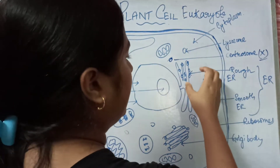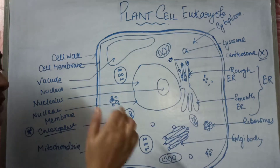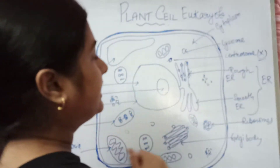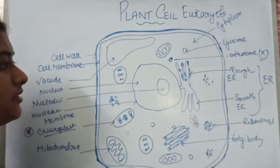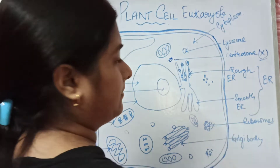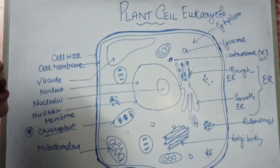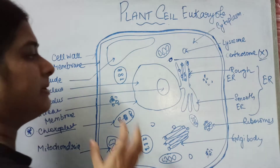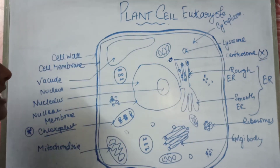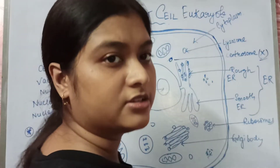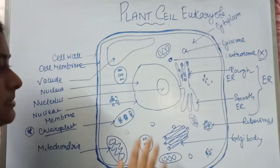Then comes the endoplasmic reticulum, which is connected with the nucleus via the nuclear membrane. The endoplasmic reticulum that contains ribosomes on its surface is called rough endoplasmic reticulum, whereas the one without ribosomes is smooth endoplasmic reticulum. The major functions of the ER include synthesis of lipids and carbohydrates.